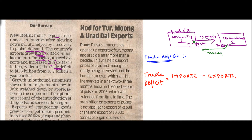When you are exporting goods, you receive money. When you are importing goods, you have to pay out money. So the deficit — that is, the shortage — is equal to the value of imports minus exports. If a country is importing more than it is exporting, it has a trade deficit. Whereas if it is exporting more and importing less, it has a trade surplus.